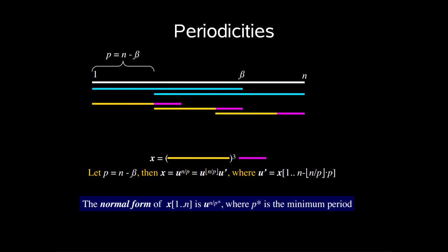Let's look at the definition of a string's period and by that the normal form. We imagine that we have a border b and calculated its length beta. Then we know we have the period p for this border as p equals n minus beta. You can now look at the period as the displacement between positions that should be equal in the border.